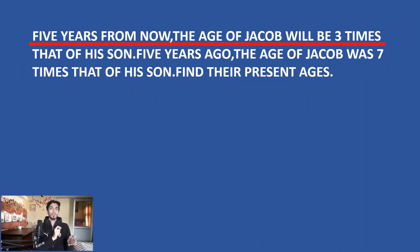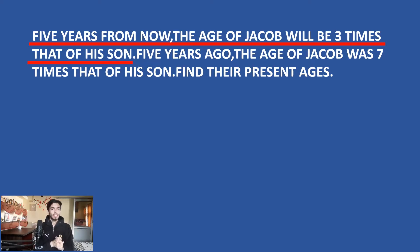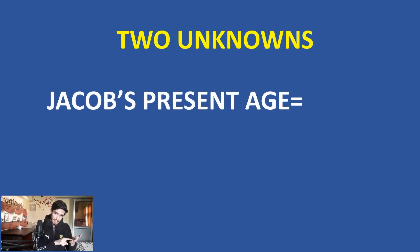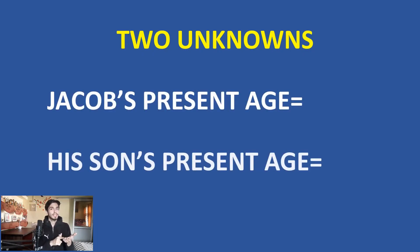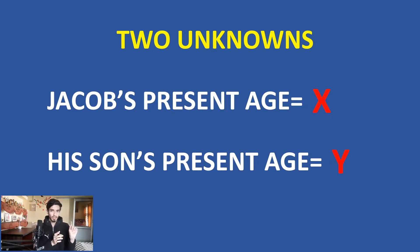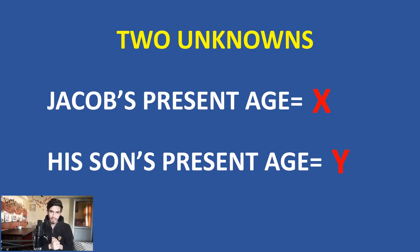Let us read the question carefully: five years from now Jacob's age will be three times that of his son's age. We have two unknowns here — Jacob's present age and his son's present age. So let us assign symbols: Jacob's present age is x, and his son's present age is y.